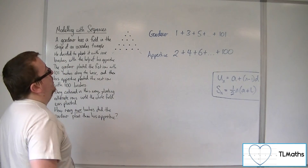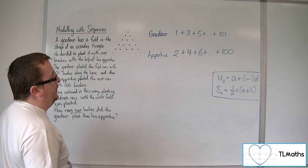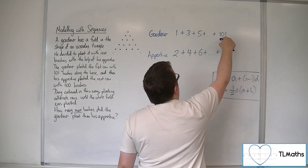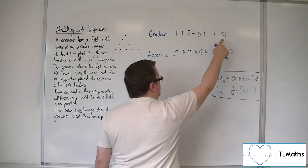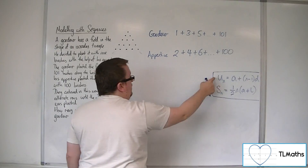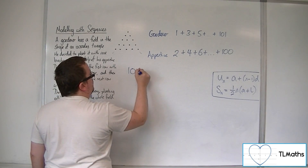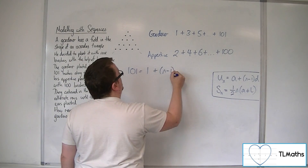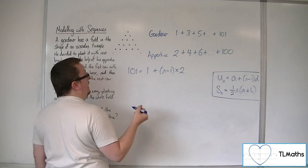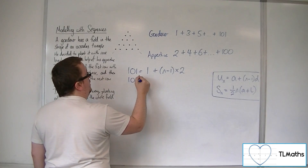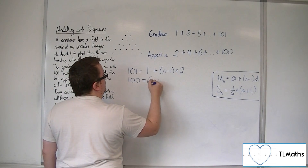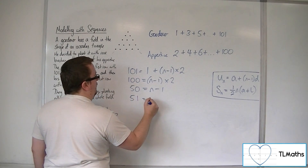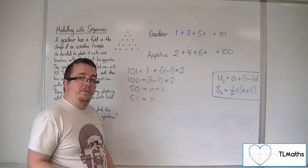We need to find out what n is for the row of 101, so what position that is. We can use this formula to say: 101 = 1 + (n−1) × 2. Take 1 from both sides, we get 100. Divide both sides by 2, we get 50 = n−1, and so there are 51 terms for the gardener — 51 rows.